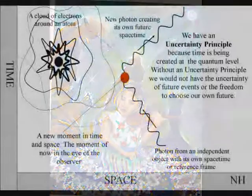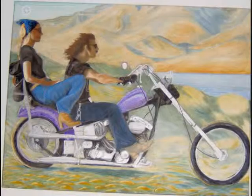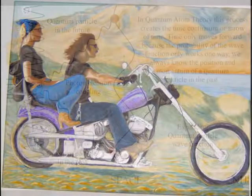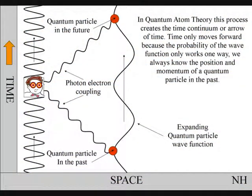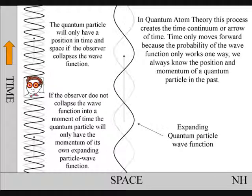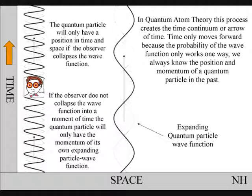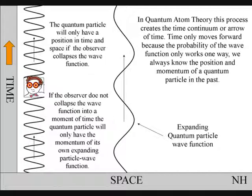The uncertainty principle of quantum physics is the same uncertainty that the observer will have with any future event. The quantum particle will only have a position in time and space if the wave particle function collapses. If the observer does not collapse the wave particle function into a moment of time, the quantum particle will only have the momentum of its own wave particle function.